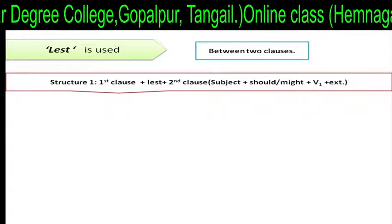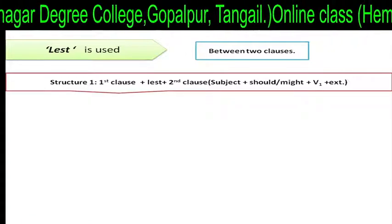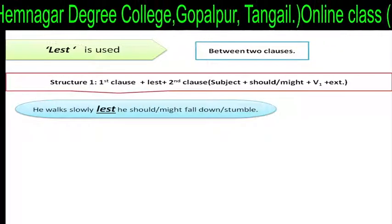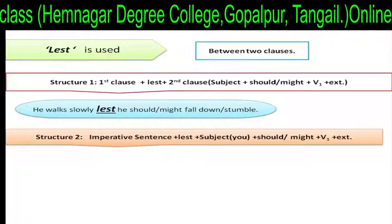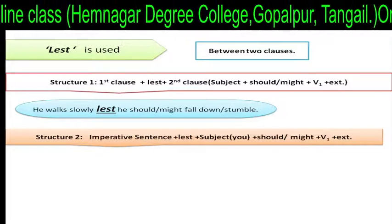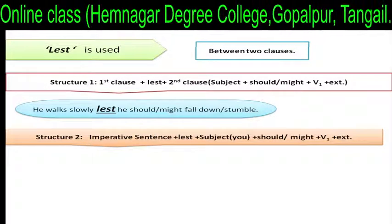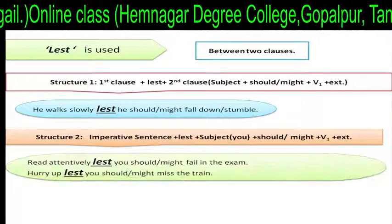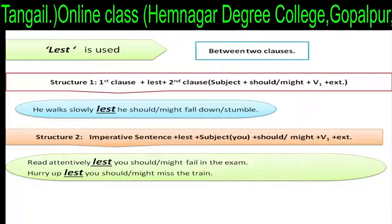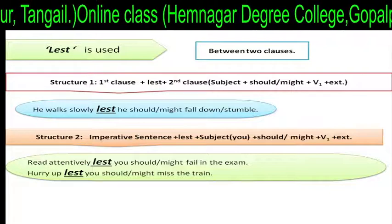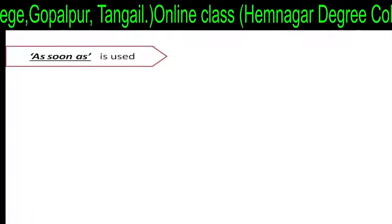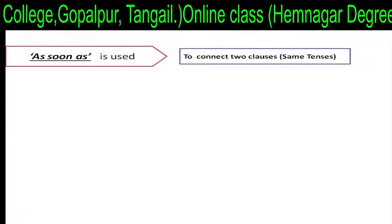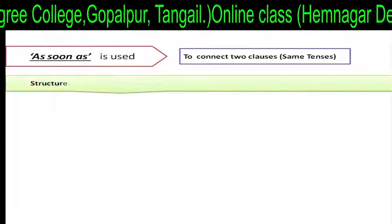Lest is used between two clauses. Structure one: first clause plus 'lest' plus second clause — subject plus 'should' or 'might' plus verb plus extension. For example: 'He walks slowly lest he should fall down.' Structure two: imperative sentence plus 'lest' plus subject plus 'should' or 'might' plus verb plus extension. For example: 'Read attentively lest you should fail in the exam. Hurry up lest you should miss the train.'